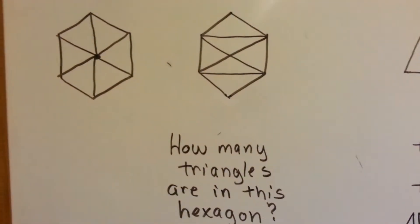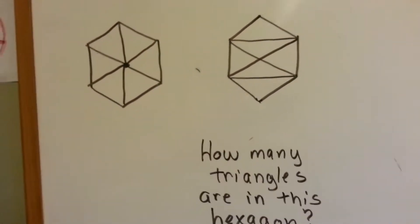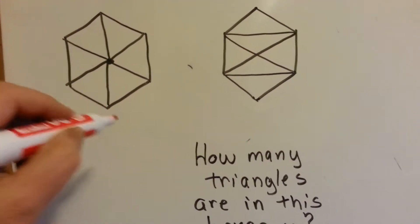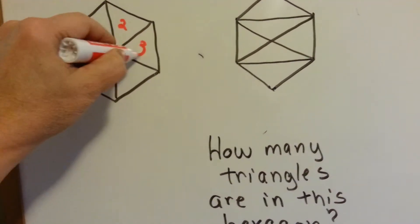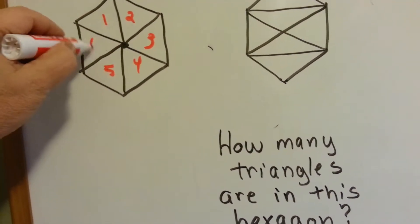So how many triangles are in this hexagon? It's got six sides. Can you count the triangles? Well, we know there's one, two, three, four, five, six.